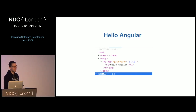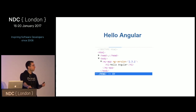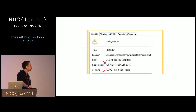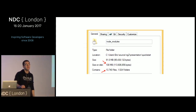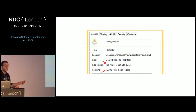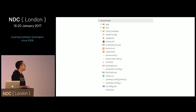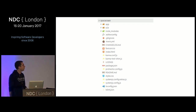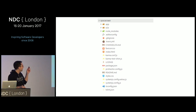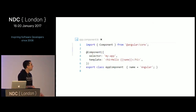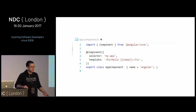This is the output of the Angular 2 quickstart — if you pull the official quickstart from GitHub, run npm install and npm start, you get essentially an h1 that says 'Hello Angular.' The problem is if you look at node_modules, you've got 108 megabytes of files and 13,740 files just to put 'Hello Angular' on the page. This is what the top level of your folder structure looks like — system.js config, extras.js, protractor config, karma config, all this stuff.